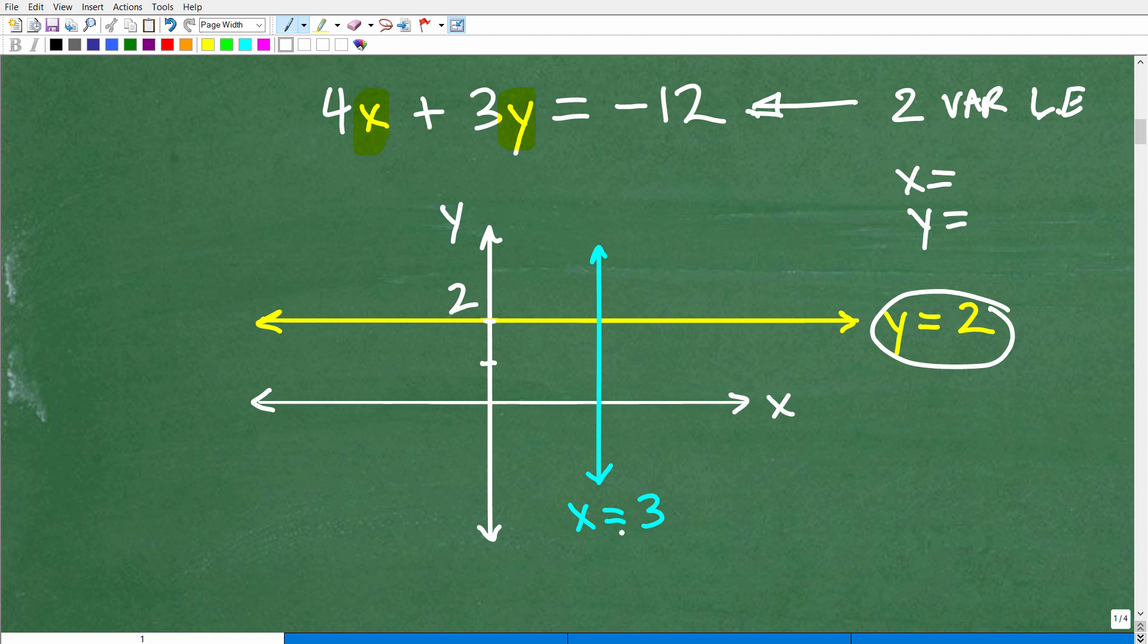For example, if I have y is equal to 2, this is a one-variable equation. y equals 2 would be a horizontal line going through 2 on the y-axis. If I wanted to graph the line x is equal to 3, that's a vertical line going through 3 on the x-axis. So many students forget which one is which.